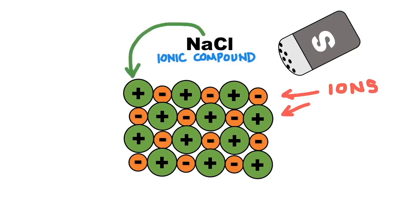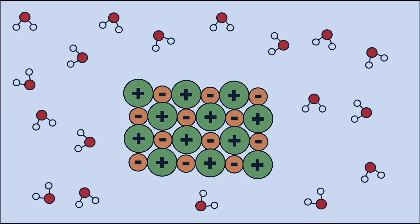Ions are charged atoms. The sodium ion is a sodium atom, the symbol Na from the periodic table, with a positive charge. And the chloride ion is a chlorine atom, the symbol Cl from the periodic table, with a negative charge. These opposite charges attract, and the ions stick together, forming a lattice.